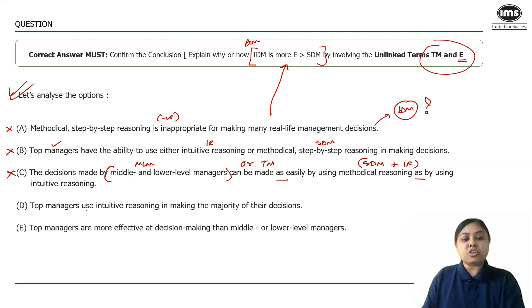Option D. Top managers use intuitive in making majority of their decisions. Very attractive option, talking of top managers and they are using intuitive. But what is missing? Which is necessary to prove why IDM is more effective? My word effective is missing. That is not there. Because it is not there, the relationship between TM... Even if they are using intuitive reasoning to make majority of their decisions, what is so special about intuitive that intuitive has become more effective? Option D is not highlighting this. I can cancel option D.